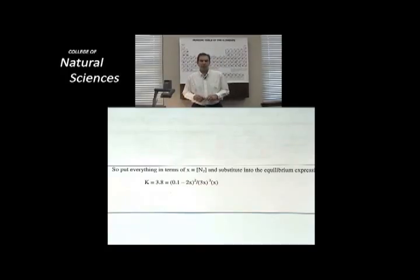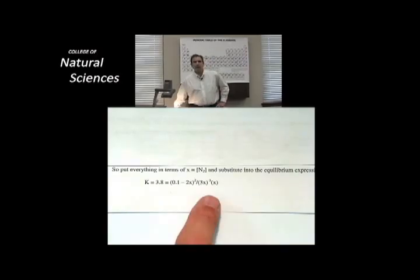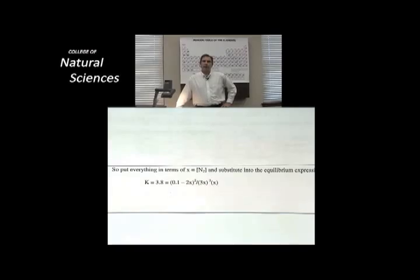But something else occurs to me. It may be solvable, but it looks like a pain. Why does it look like a pain? Because in that denominator is x cubed times x. In other words, I have a polynomial expression which is fourth order. It's a quartic. It's x to the fourth. How do you solve x to the fourth problems?